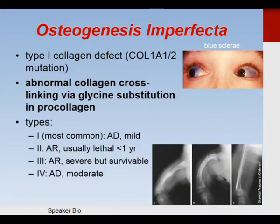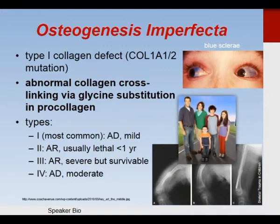Osteogenesis imperfecta is a type 1 collagen defect — abnormal collagen cross-linking via glycine substitution in procollagen. There are several different types. Type 1 is the most common and is autosomal dominant. These patients have a mild manifestation with easily broken bones.